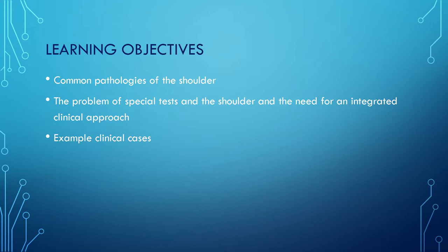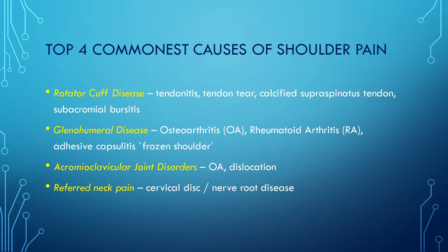A study was conducted to determine the top four commonest causes of shoulder pain in general practice, using ultrasound diagnosis. The top four were rotator cuff disease, glenohumeral disease, acromioclavicular joint disease, and referred neck pain.